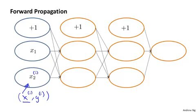So this is maybe xi1 and xi2 are the values we set the input layer to. And when we forward propagate it to the first hidden layer here, what we do is compute z21 and z22. So these are the weighted sum of inputs of the input units.